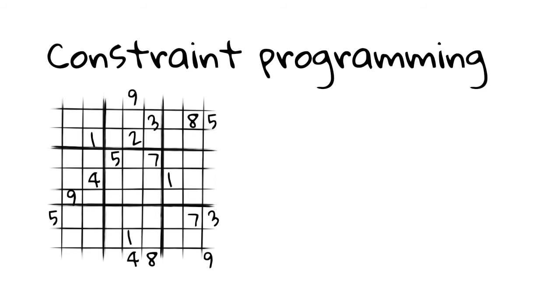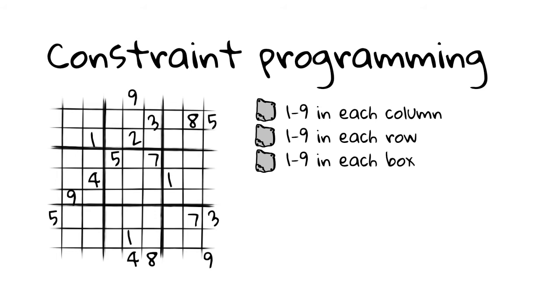In Sudoku, you have a fixed set of rules. In our case, these rules translate into a fixed set of voting axioms. When solving a Sudoku, you try to use these rules as efficiently as possible to rule out all but one possibility.